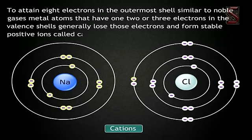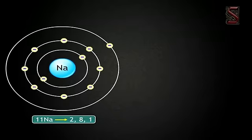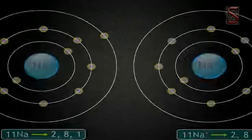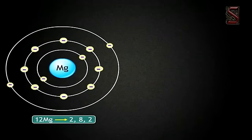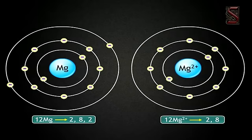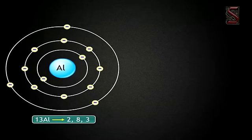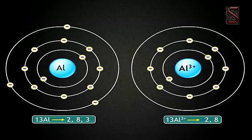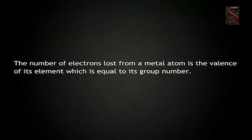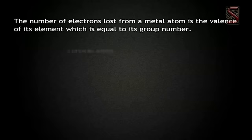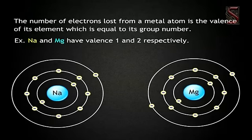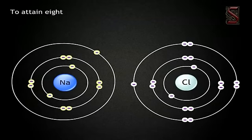To attain eight electrons in the outermost shell, similar to noble gases, metal atoms that have one, two, or three electrons in the valence shells generally lose those electrons and form stable positive ions called cations. For example, sodium (Na, EC: 2,8,1) loses one electron to form Na⁺ (EC: 2,8); magnesium (Mg, EC: 2,8,2) loses two electrons to form Mg²⁺ (EC: 2,8); aluminium (Al, EC: 2,8,3) loses three electrons to form Al³⁺ (EC: 2,8). The number of electrons lost is the valence of the element, which equals its group number.